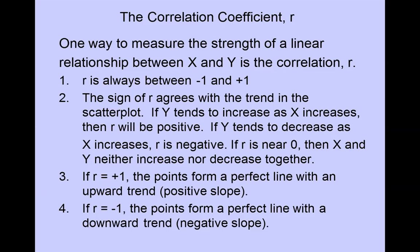If r is positive 1, the most it can ever be, the points form a perfect line that has an upward trend or a positive slope. If r is negative 1, the smallest it can ever be, the points form a perfect line but with a downward trend or a negative slope.